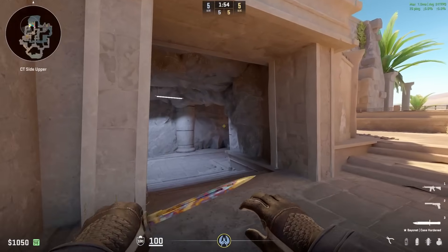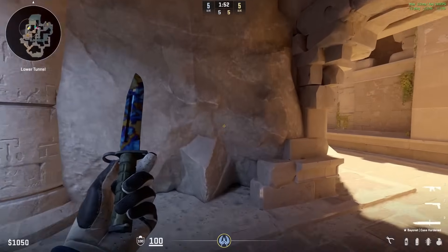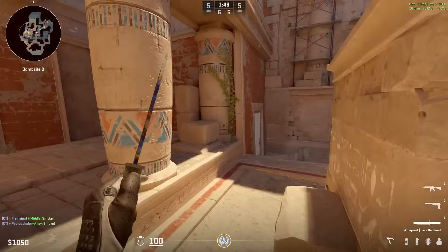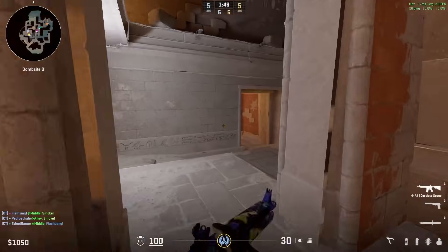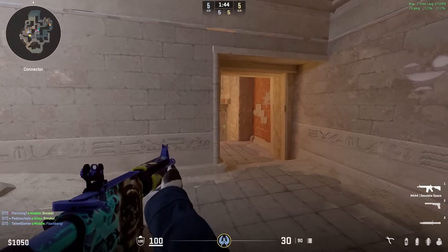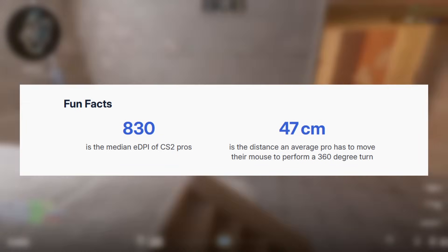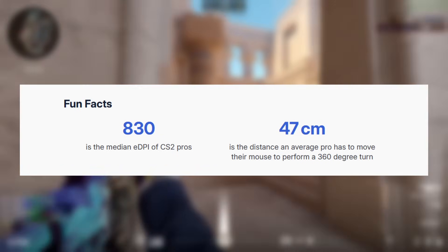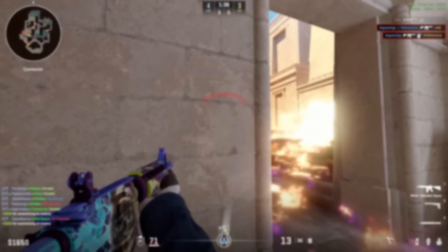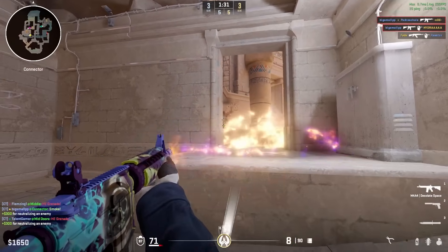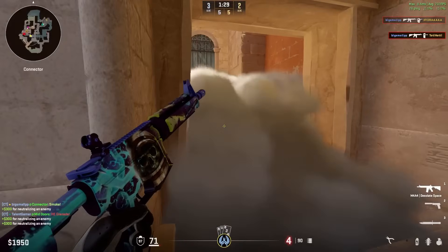When it comes to finding a good mouse sensitivity in any competitive game, the active pro scene is usually your first point of reference. In CS2, the only up-to-date publicly available pointer is the median sensitivity of all current pros, free agents and content creators on ProSettings.net, which doesn't provide a whole lot of insight into the most popular sensitivities among pros and other interesting stats we can derive from it.